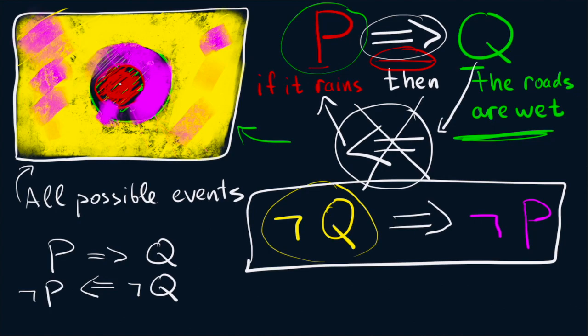And it makes more sense, because in our example, this will become: if the roads are dry, then it is not raining, which of course makes much more sense.